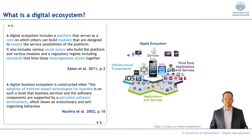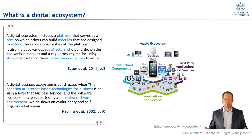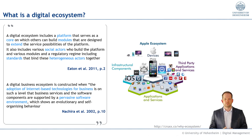A digital ecosystem includes a platform that serves as a core, on which others can build modules that are designed to extend the service possibilities of the platform. It also includes various social actors who build the platform and various modules in a regulatory regime, including standards that bind these heterogeneous actors together. This definition is a little abstract — that's typical for definitions.